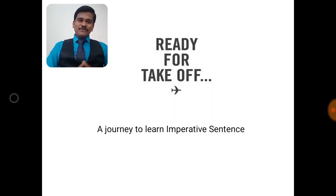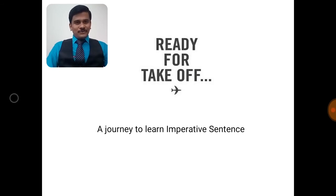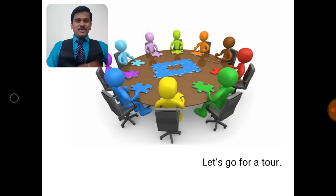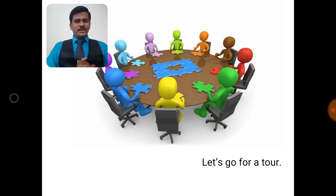I am ready for a journey. We are together — we will go for a journey. It's a journey to learn the imperative sentence in a more detailed manner. Are you ready? So here we go. We fixed a place, we fixed a meeting, we fixed a time, and the meeting is going on.